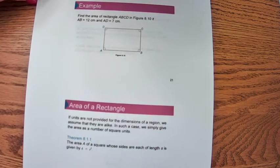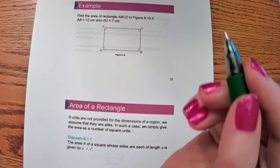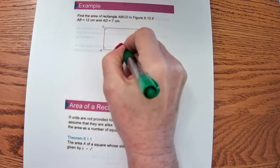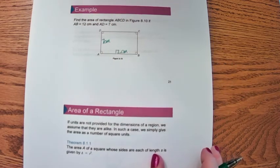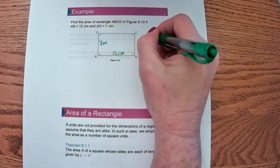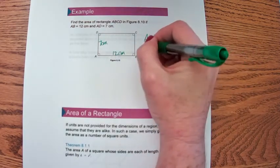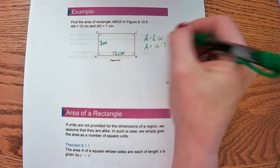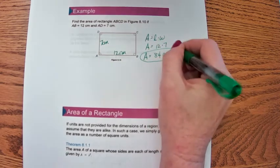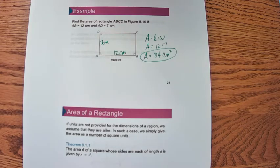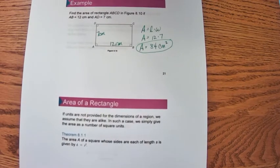Let's find the area of this rectangle. We're told that AB is 12 centimeters and AD is 7 centimeters, so we have both units we need. The area equals the length times the width — 12 times 7 — which means the area is 84 square centimeters. If the problem doesn't provide units, we just use the word 'units.'